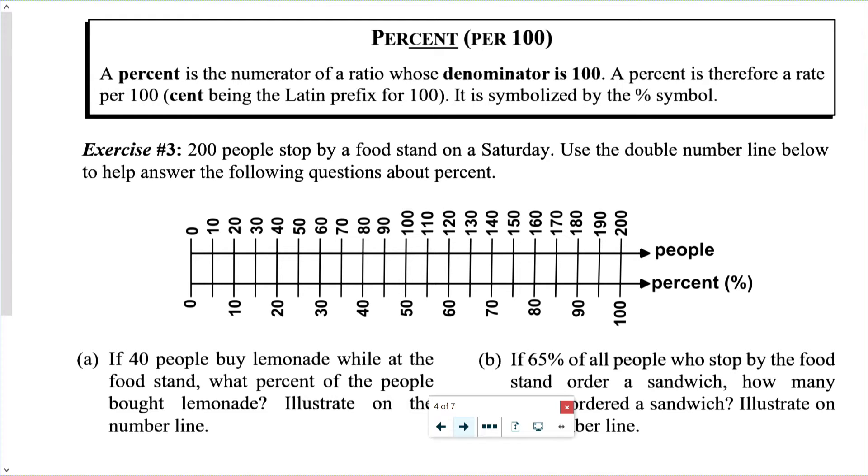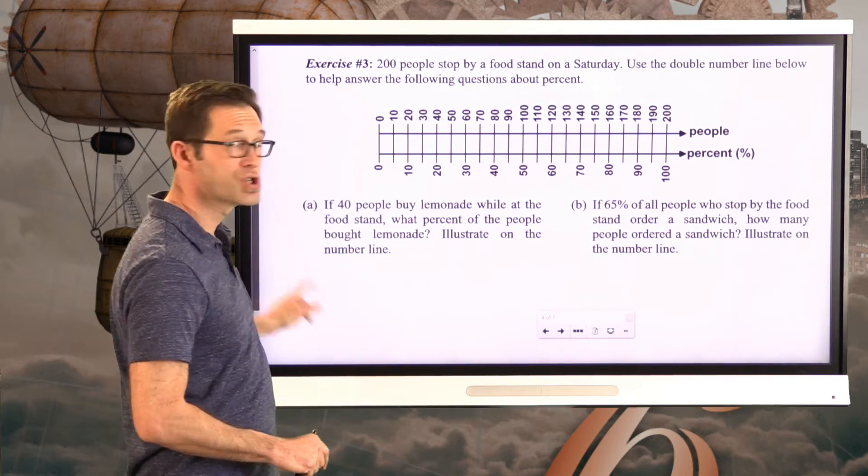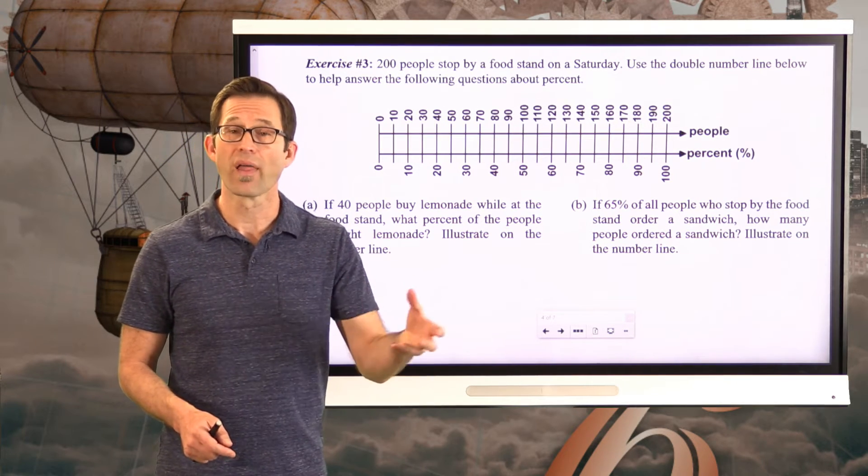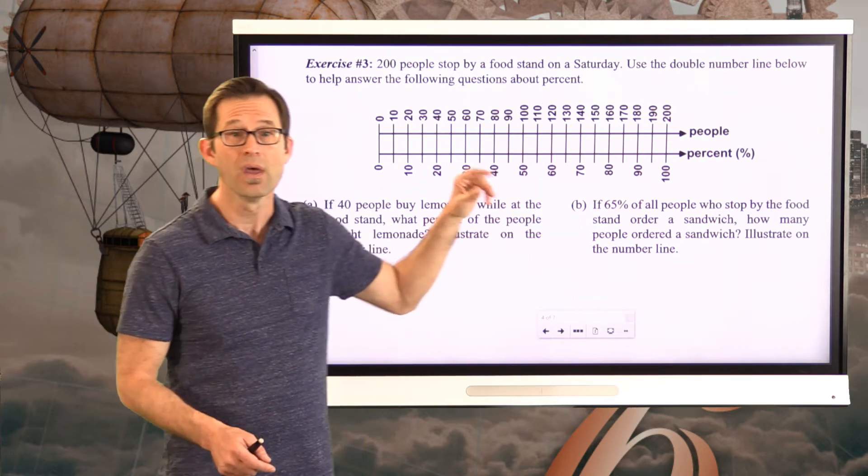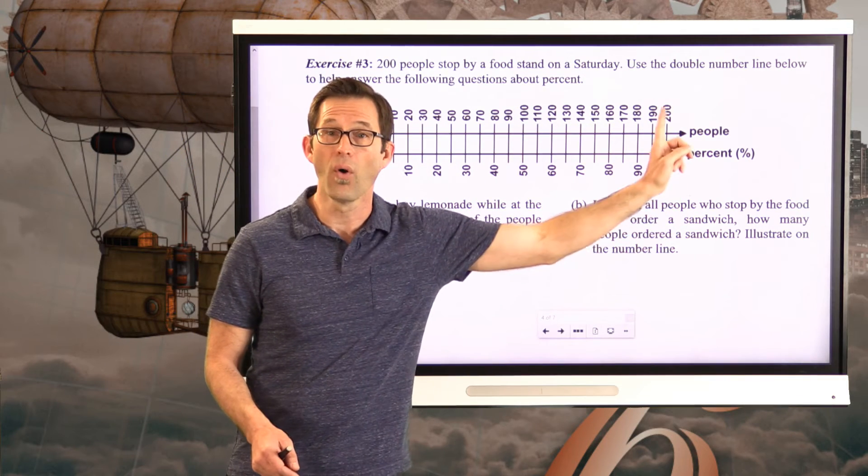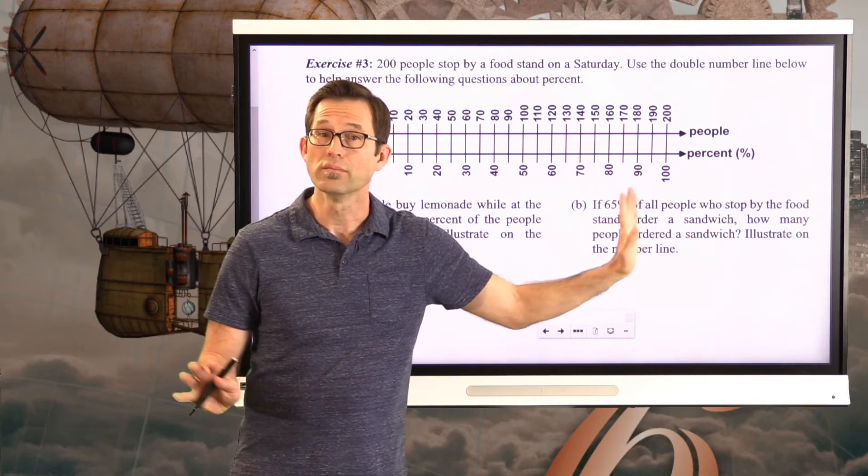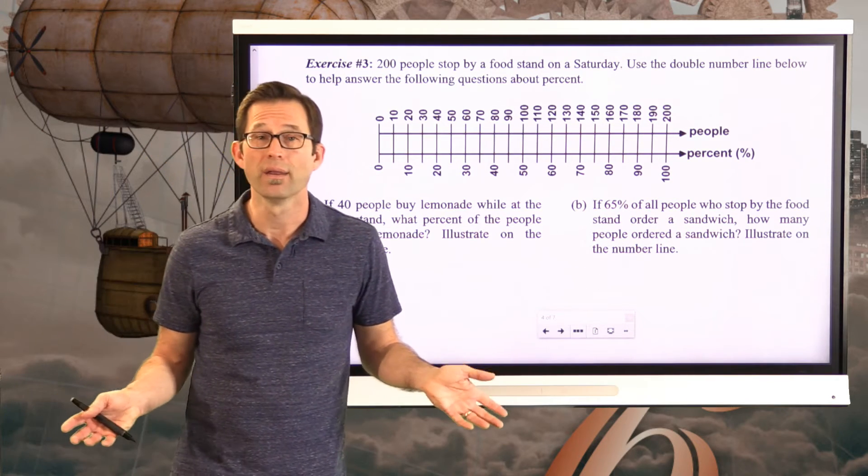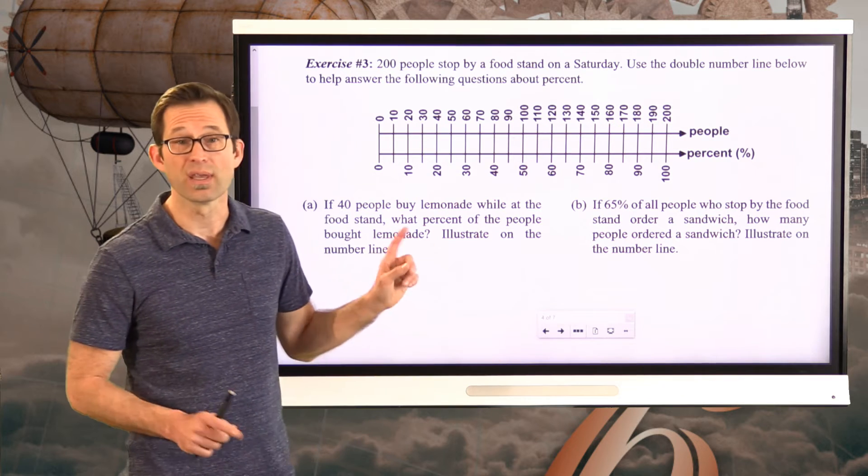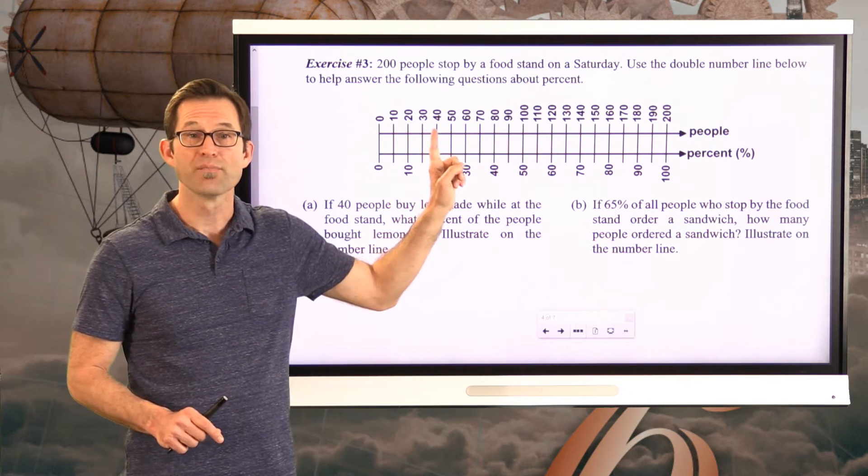Exercise number three. 200 people stop by a food stand on a Saturday. Use the double number line below to help answer the following questions about percent. So percents are just specialized ratios. They're just a ratio where the denominator is 100. And we worked with equivalent ratios back in the last unit with double number lines. And it's really great because on this number line, we've got the people, zero to 200. And on this number line, we have the percent zero to 100. The whole on a percent is equal to 100. Simple enough. And now reading this double number line is simple. Take a look at letter A. If 40 people buy lemonade while at the food stand, what percent of the people bought lemonade? Illustrate on the number line.